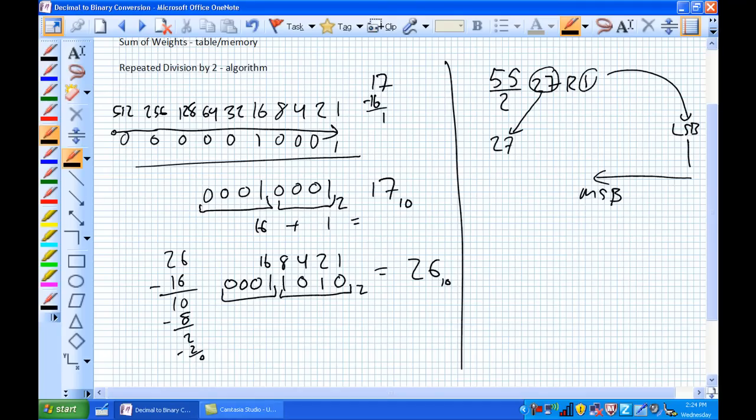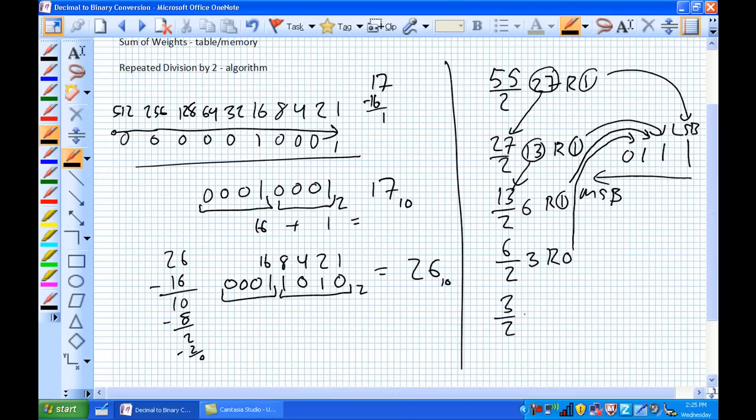All I take is that 27, divide that by 2. 2 goes into 27, 13 times with a remainder also of 1. I put that number here. 13 divided by 2 is 6 with a remainder of 1. That goes there. 6 divided by 2 goes in 3 times with a remainder of 0. That goes right there. We're working our way from LSB to MSB.